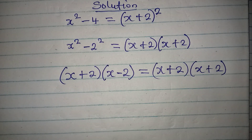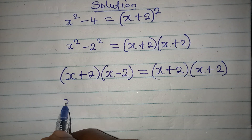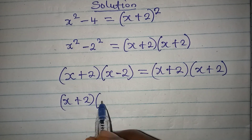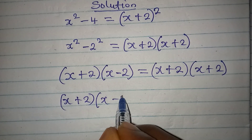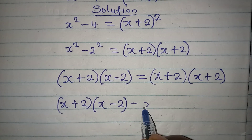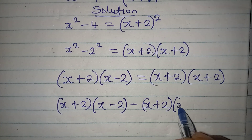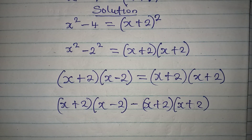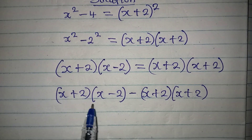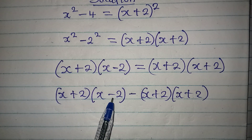Now let me bring everything to the same side first, so I will have x plus 2 into x minus 2, minus x plus 2 into x plus 2. Remember, these are not the same thing because this side is negative and this is positive.